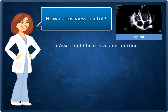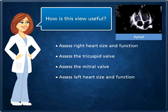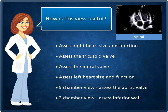We mainly use this view to assess right heart size and function, assess the tricuspid valve and the mitral valve, and assess left heart size and function. It is from this view that we perform something called a Simpson's measurement to ascertain the ejection fraction. We also use this view to measure diastolic function and LA volumes. If we angle the beam upwards we can also visualise and assess the aortic valve — this is often referred to as a five chamber view. And if we rotate the transducer anti-clockwise we get what's known as a two chamber view, which is a great view for assessing the inferior region of the left ventricle.